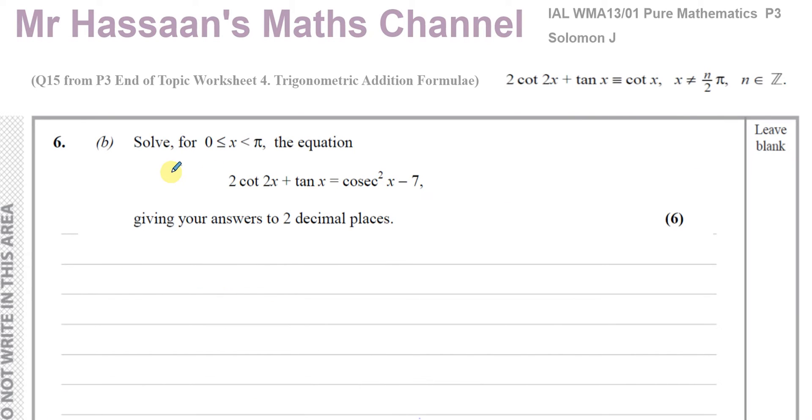Now for part B. Part B says solve for x between 0 and pi, the equation 2 cot 2x plus tan x is equal to cosec squared x minus 7. Now, whenever you see part B of a question, always think to yourself, most likely it's going to have some relation to part A. And if you look at part A and compare what we had to show in part A, they're identical. 2 cot 2x plus tan x is equal to cot x. So what I can do here is I can use my answer from part A and replace this with cot x, and that's going to make my life a whole lot easier. So I'm going to say cot x is equal to cosec squared x minus 7.